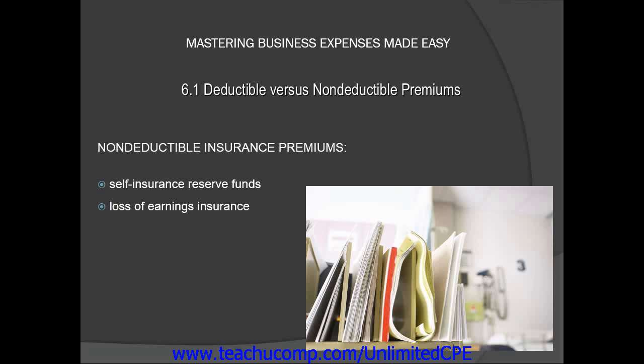Loss-of-earnings insurance includes any insurance that covers losses due to sickness or disability. The third type of non-deductible premiums are those paid for insurance to secure a loan. The final type are premiums paid for life insurance policies and annuities. These rules apply to any person with a financial interest in the business.